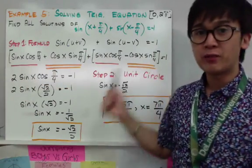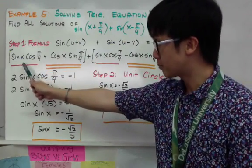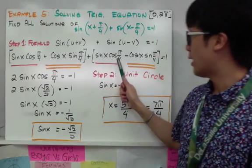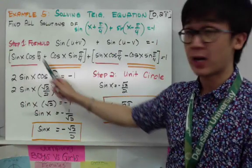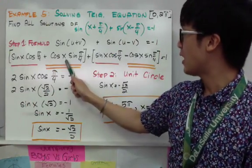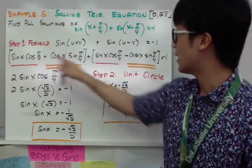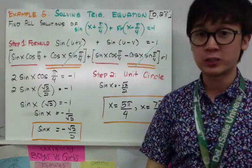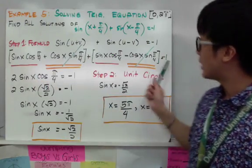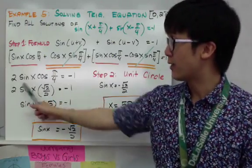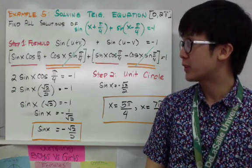We combine like terms. The two sine x cosine(pi/4) terms add to give 2 sine x cosine(pi/4). The cosine x sine(pi/4) terms cancel each other out — positive and negative — leaving zero. We now have a simpler equation: 2 sine x cosine(pi/4) equals negative 1. From the unit circle, cosine(pi/4) equals square root of 2 over 2, so substituting gives 2 sine x times (square root of 2 over 2) equals negative 1.